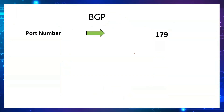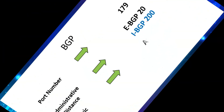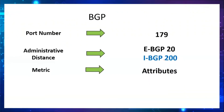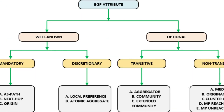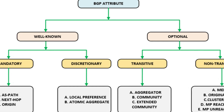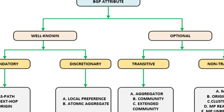The BGP port number is 179. For administrative distance, EBGP has a value of 20 and IBGP has a value of 200. Regarding the metric, unlike OSPF which uses bandwidth or RIP which uses hop count, BGP does not have a traditional metric — instead it uses attributes such as local preference, weight, and others.